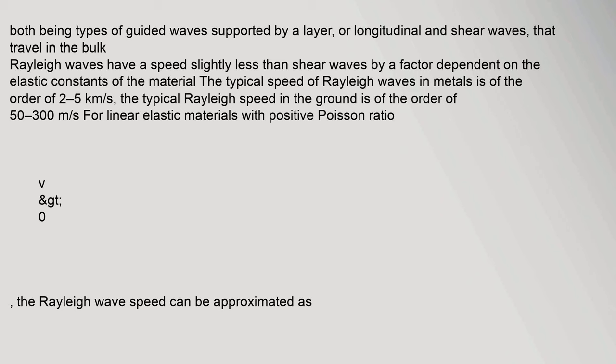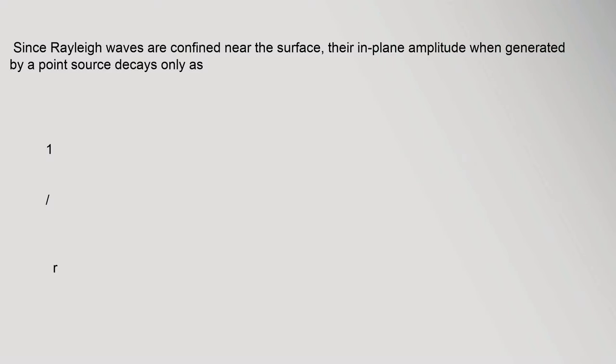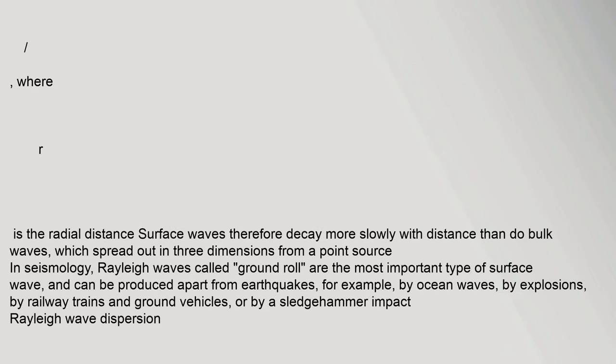Rayleigh waves have a speed slightly less than shear waves by a factor dependent on the elastic constants of the material. The typical speed of Rayleigh waves in metals is of the order of 2 to 5 km/s, where C_R ≈ 0.862–1.14 × C_s. Since Rayleigh waves are confined near the surface, their in-plane amplitude when generated by a point source decays only as 1/√R, where R is the radial distance.